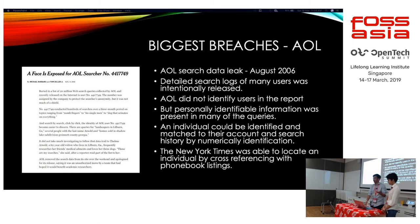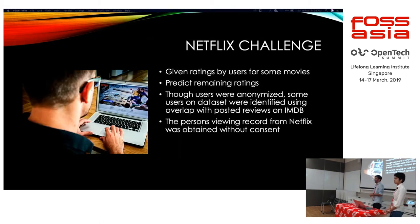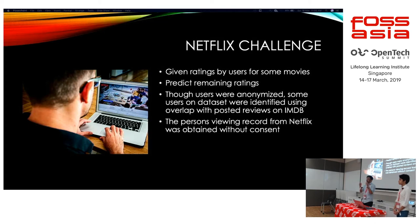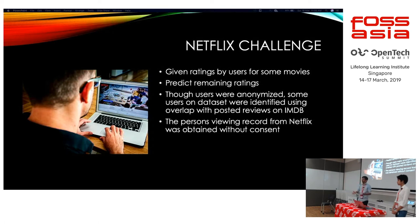AOL's breach was one of the most well-known. Then there was Netflix. Netflix was aware of the privacy laws but there was no consent from users that their records would be viewed. There was a Netflix challenge where users' ratings were given and you predicted their rating for another movie. Though users were anonymized, some users in the dataset were identified using data from IMDB, and for some users it was exactly known which user was that person in the challenge.